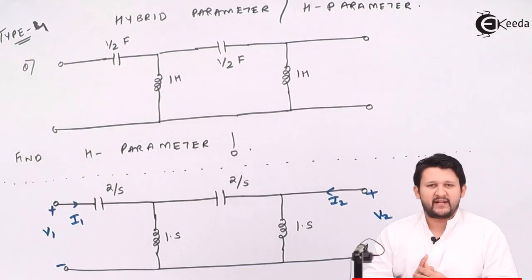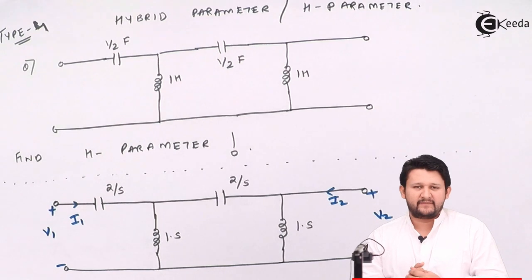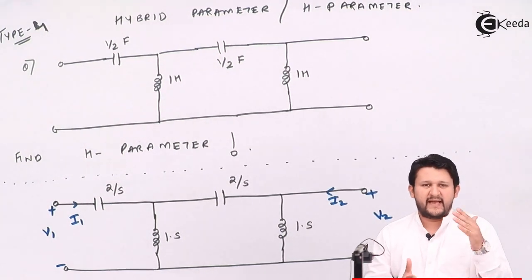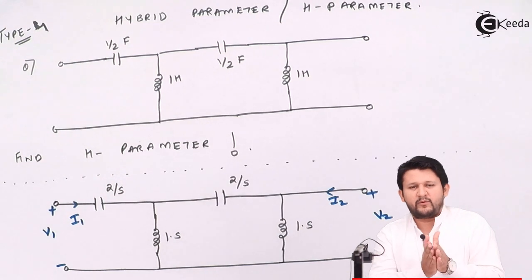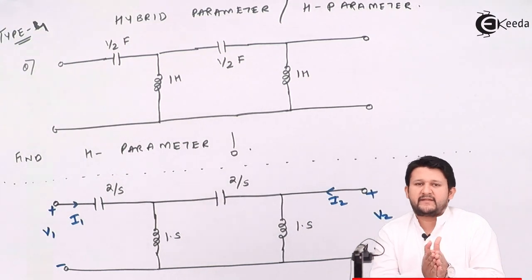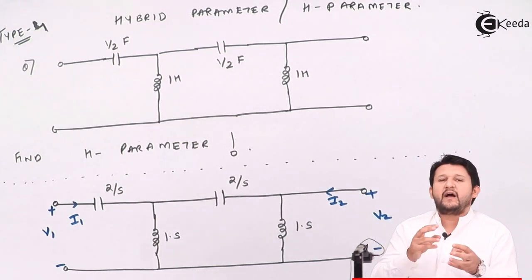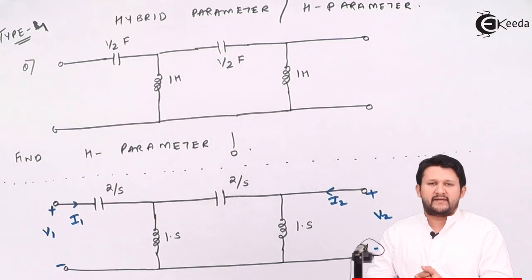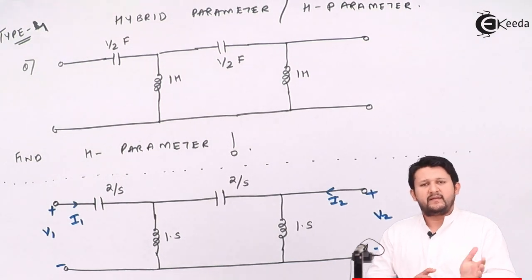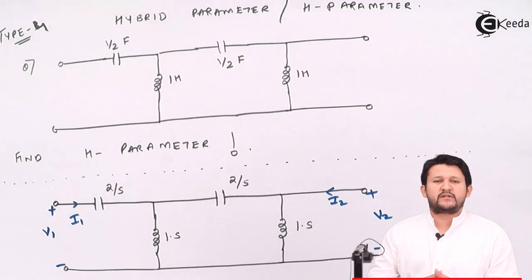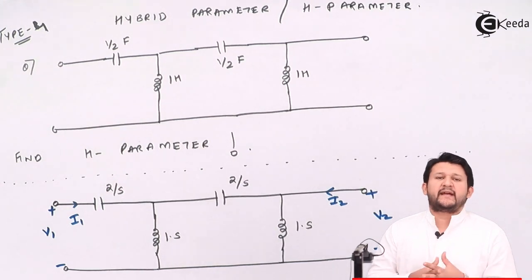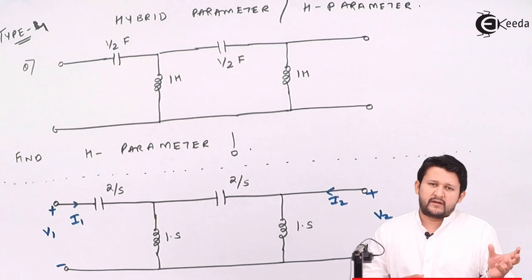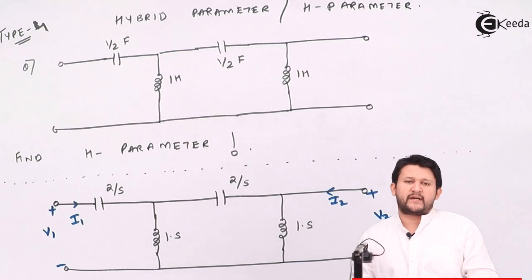This is type 4, your last parameter. We started earlier with Z parameters where we had to apply KVL, then we came to ABCD parameters where we had to apply KVL, but after applying Z parameters we had to do some modification to get ABCD parameters. The third type we studied was Y parameters, where we applied KCL.